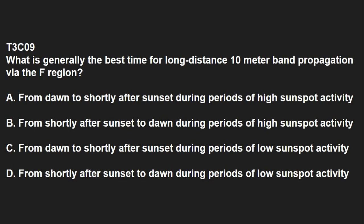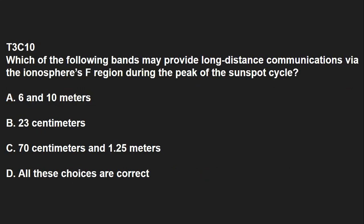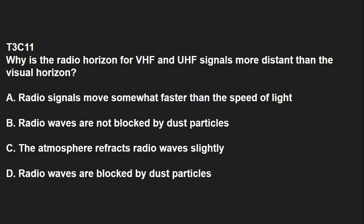T3C09: What is generally the best time for long-distance 10-meter band propagation via the F region? From dawn to shortly after sunset during periods of high sunspot activity. T3C10: Which of the following bands may provide long-distance communications via the ionosphere's F region during the peak of the sunspot cycle? That answer is 6 and 10 meters. T3C11: Why is the radio horizon of VHF and UHF signals more distant than the visual horizon? The atmosphere refracts radio waves slightly.